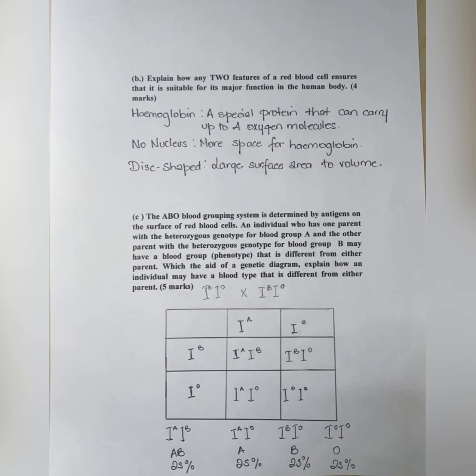Secondly, you can talk about the fact that the red blood cells do not have a nucleus at maturity. And that gives it an advantage. It gives it more space to house the hemoglobin molecule so that more molecules of oxygen will be transported around the body.